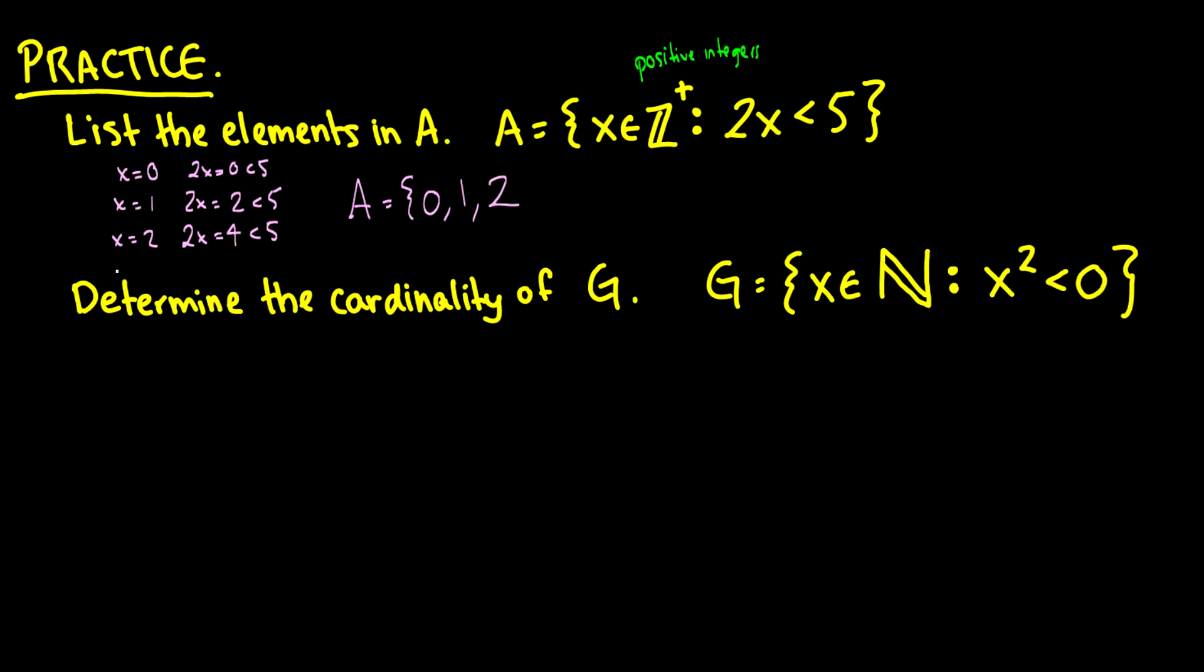But now if we pick x is equal to 3, then we get 2x is equal to 6, which is not less than 5, therefore 3 will not be in the set. And based on our knowledge of numbers, we know that anything over 3 will also not be in the set.